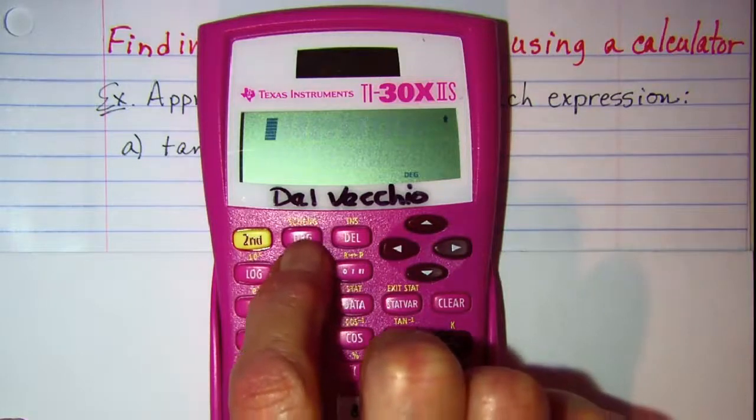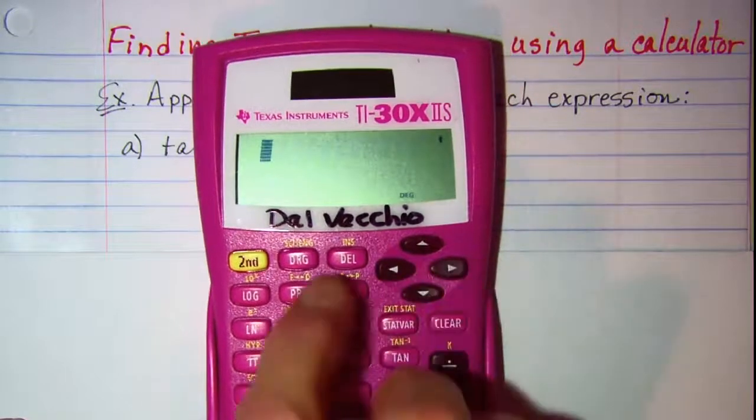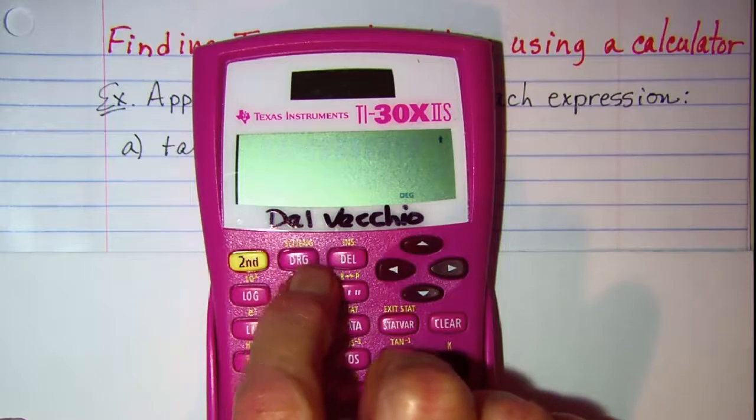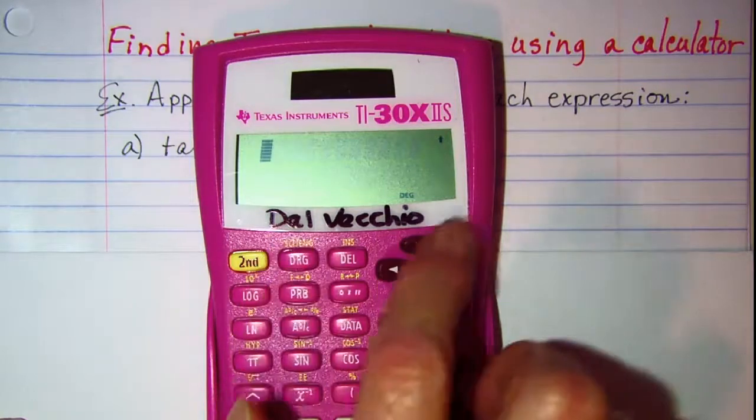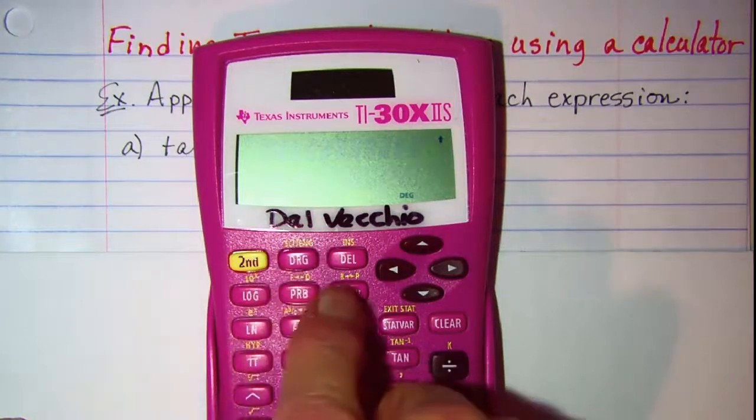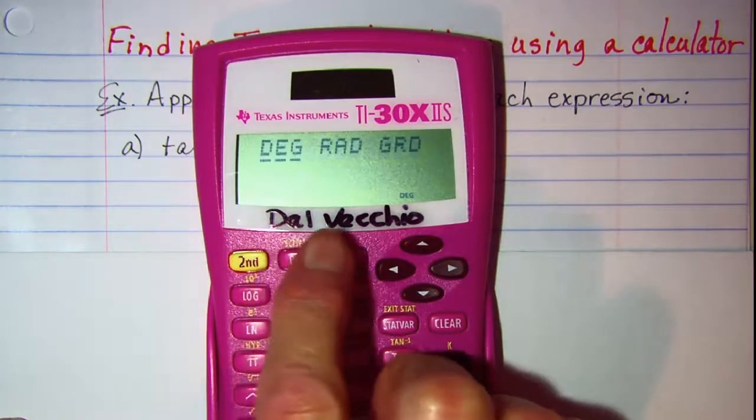basically you just have to hit the button that says DRG—that stands for degrees, radians, and grads. So when we hit that, watch here and see what happens in the display. When I hit DRG,